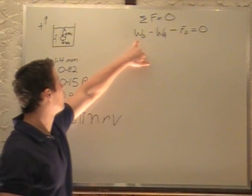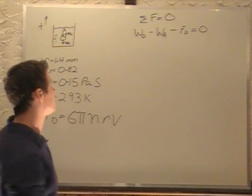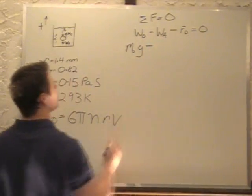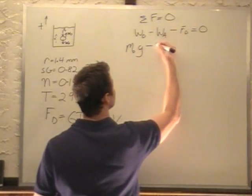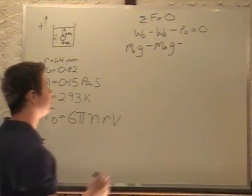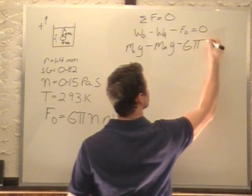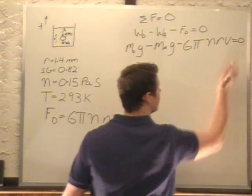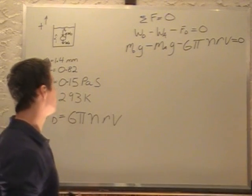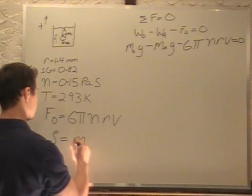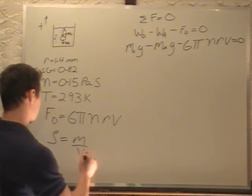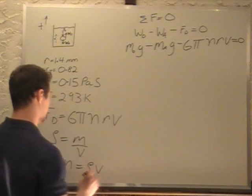The weight of the oil displaced is going to be the mass of the oil displaced times gravity, minus the weight of the air bubble which is the mass of the air bubble times gravity, minus our drag force which is 6πηrv. Now we know we have a density formula where we can say density equals mass divided by volume. We want to solve for mass and get mass equals density times volume.